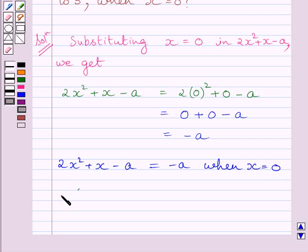We are also given that the value of 2x² + x - A equals 5 when x = 0.